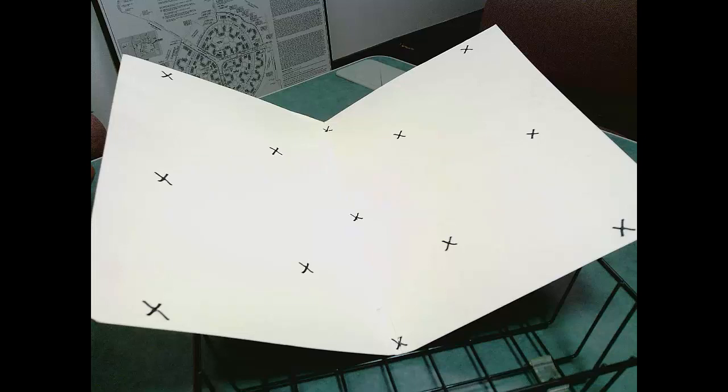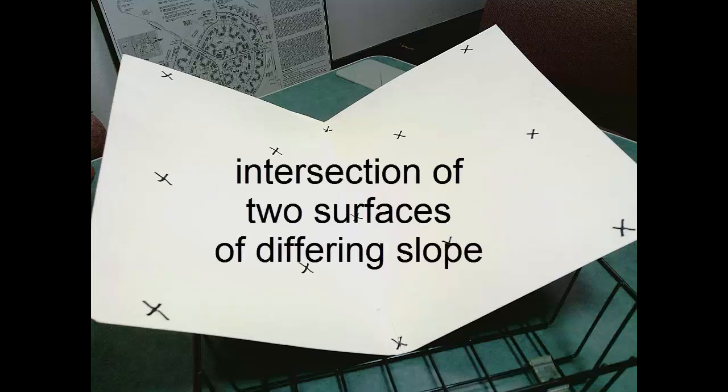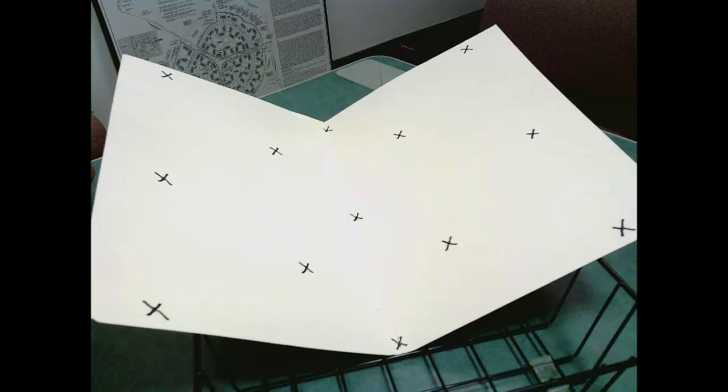A break line is the intersection line between two topographic surfaces of different slope. This manila folder is a good model of the land on either side of our stream.